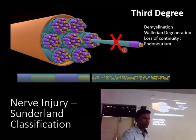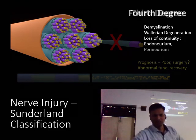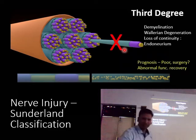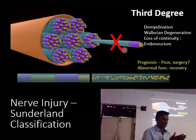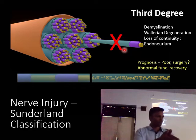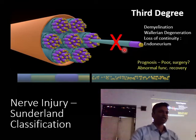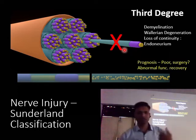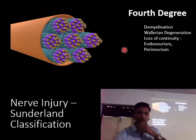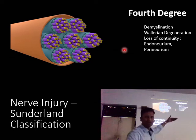Because the endoneurium is not intact in third degree, the prognosis is poor — regeneration has no guide to direct it. There may be abnormal function as a result of misdirected regeneration. We will discuss those abnormal functional outcomes in later lectures.